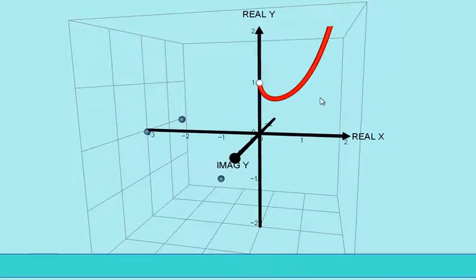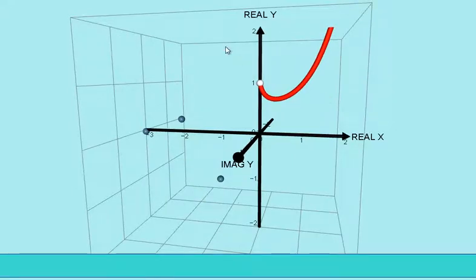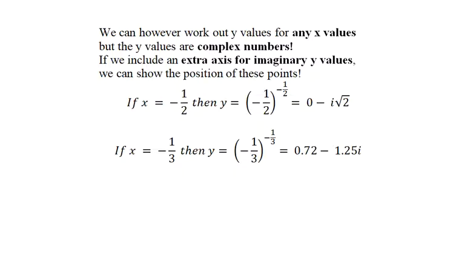Now I calculated a few and I'll show you in the next diagram. If x is negative 1 half, then y is negative 1 half to the power negative 1 half, which is quite difficult to calculate manually.